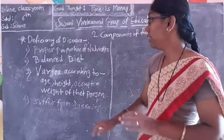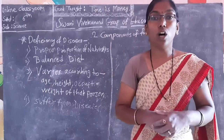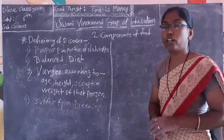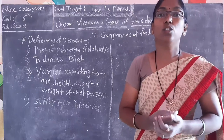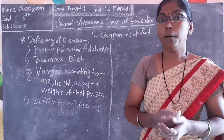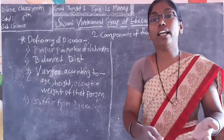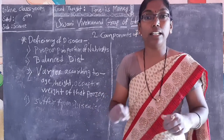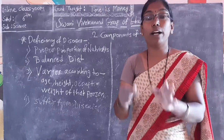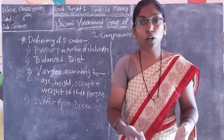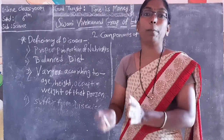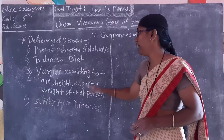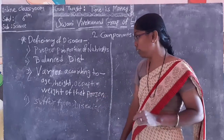According to height also — a shorter person and a taller person get different diets. Next is occupation or activity level: a farmer does more work than others, so they require more food. Occupation is also important. And regarding weight — a person with more or less weight both require proper nutrients. So balanced diet varies according to age, height, occupation, and weight of that person.